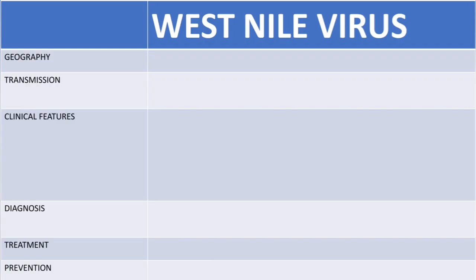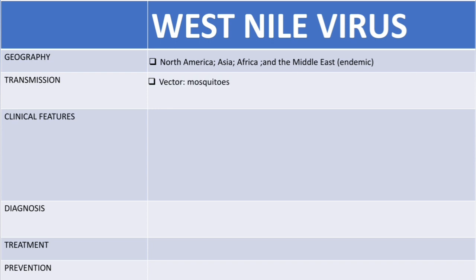On geographical distribution, the West Nile virus is found in North America, Asia, and Africa, and is actually endemic in the Middle East. This virus is transmitted through mosquito bites, and other reservoirs include birds, horses, and dogs.